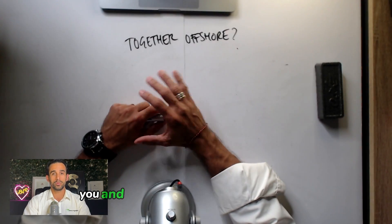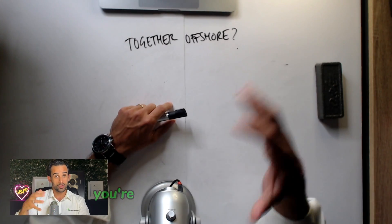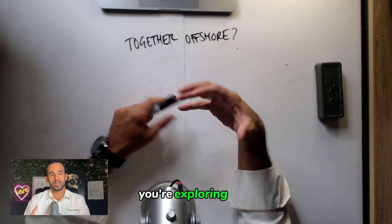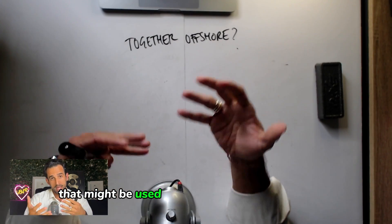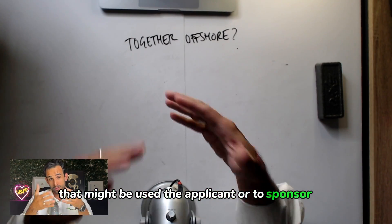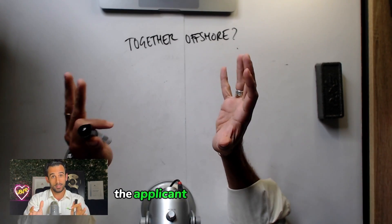So you have indicated that you and your partner are together offshore. If you're watching this, you're overseas, you're not in Australia, and you're exploring what the most appropriate option is to get into Australia. That might be you as the applicant or to sponsor you considering options for your partner. I'm just going to address you as the applicant to keep it simple.